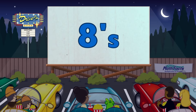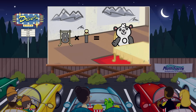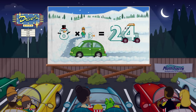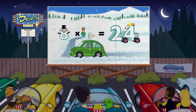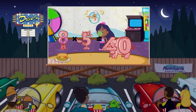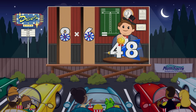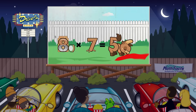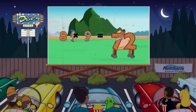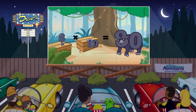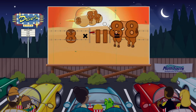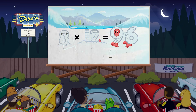Now let's try eight. 8 times 1 equals 8. 8 times 2 equals 16. 8 times 3 equals 24. 8 times 4 equals 32. 8 times 5 equals 40. 8 times 6 equals 48. 8 times 7 equals 56. 8 times 8 equals 64. 8 times 9 equals 72. 8 times 10 equals 80. 8 times 11 equals 88. 8 times 12 equals 96.